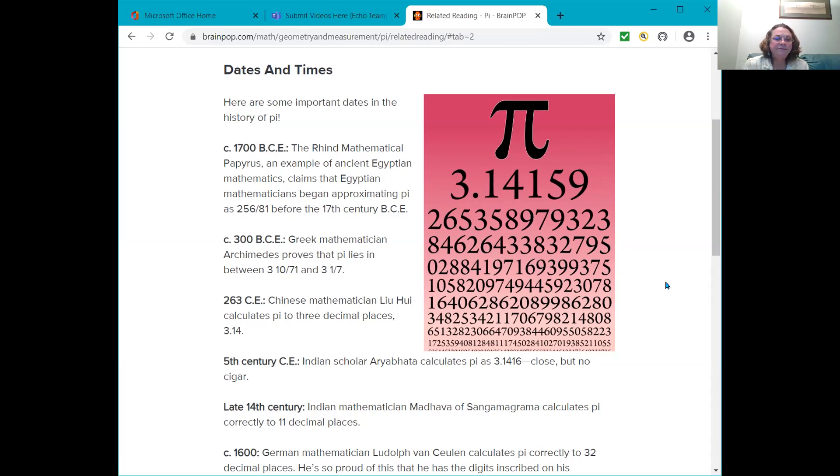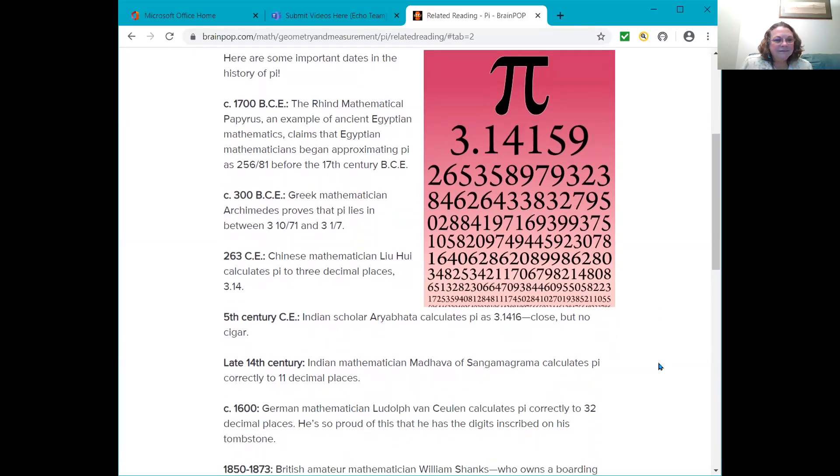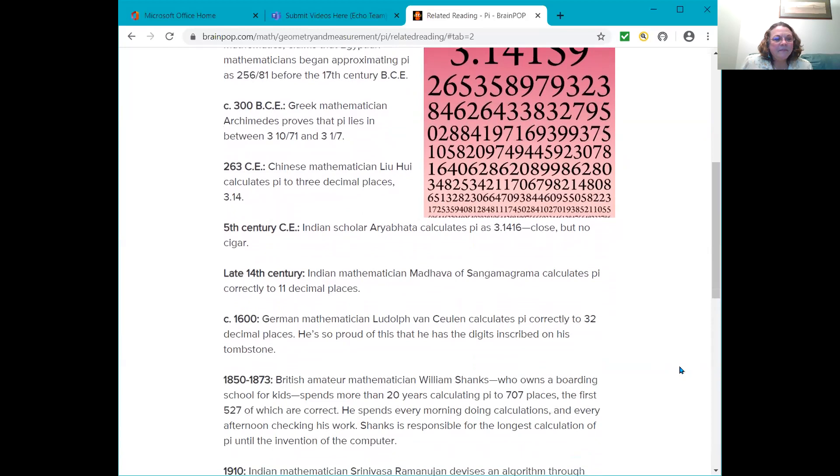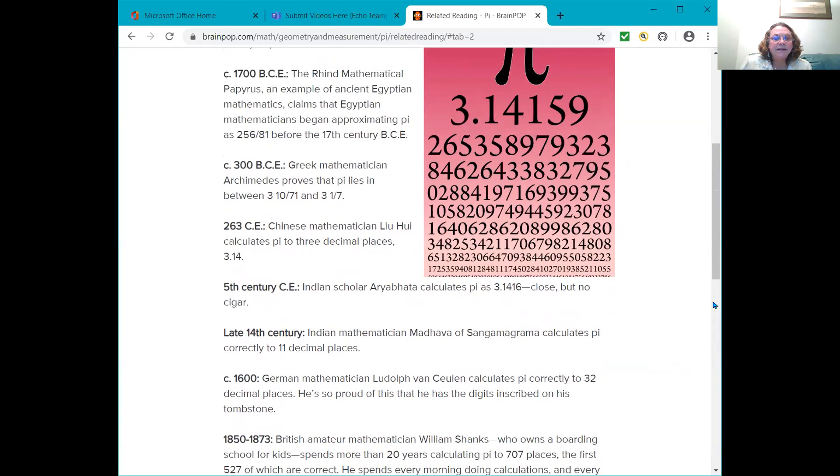Then in the 5th century CE, Indian scholar Aryabhata calculates Pi as 3.1416. Close, but no cigar. Late 14th century Indian mathematician Madhava of Sangamagrama calculates Pi correctly to 11 decimal places. Look at that. That means from here to there, up to the 8. I've got it figured out.